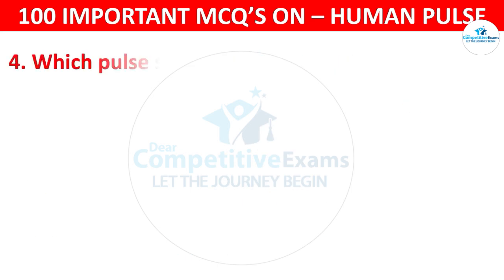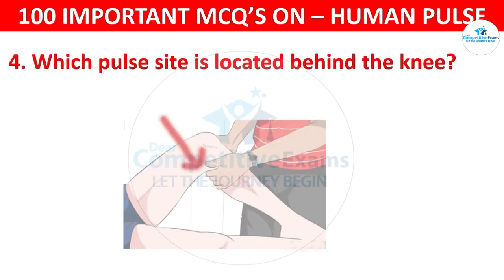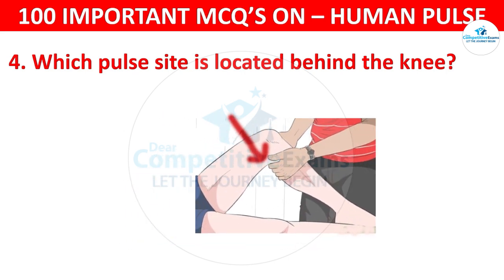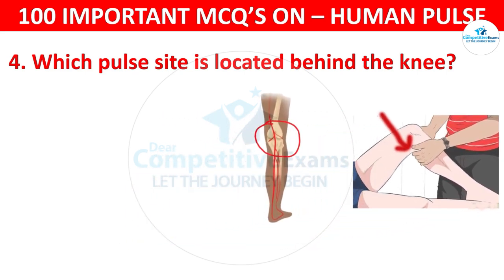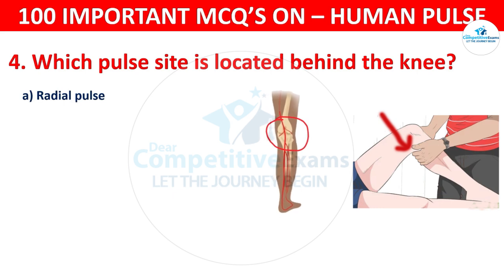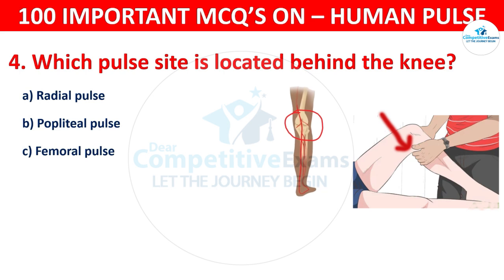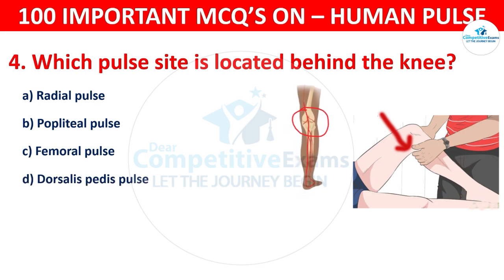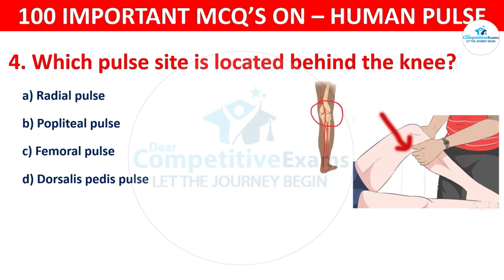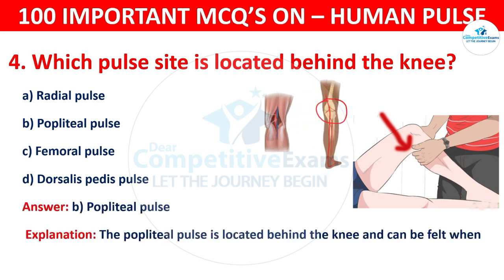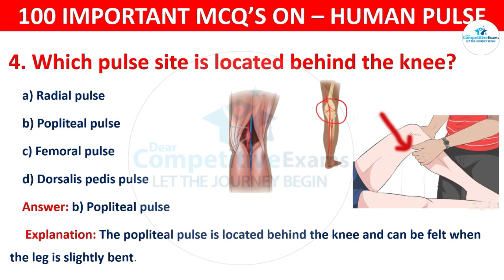Question number 4: Which pulse site is located behind the knee? Your options are: Radial pulse, Popliteal pulse, Femoral pulse, or Dorsalis pedis pulse. The correct answer is B, that is popliteal pulse. The popliteal pulse is located behind the knee and can be felt when the leg is slightly bent.